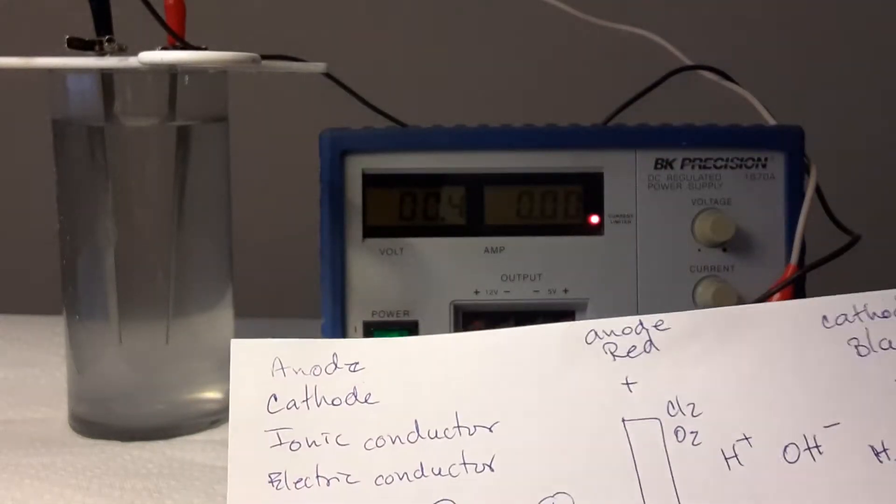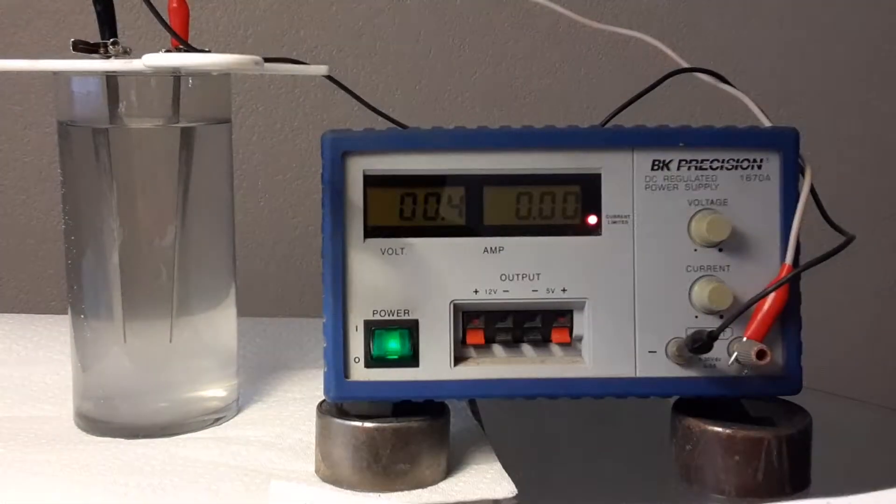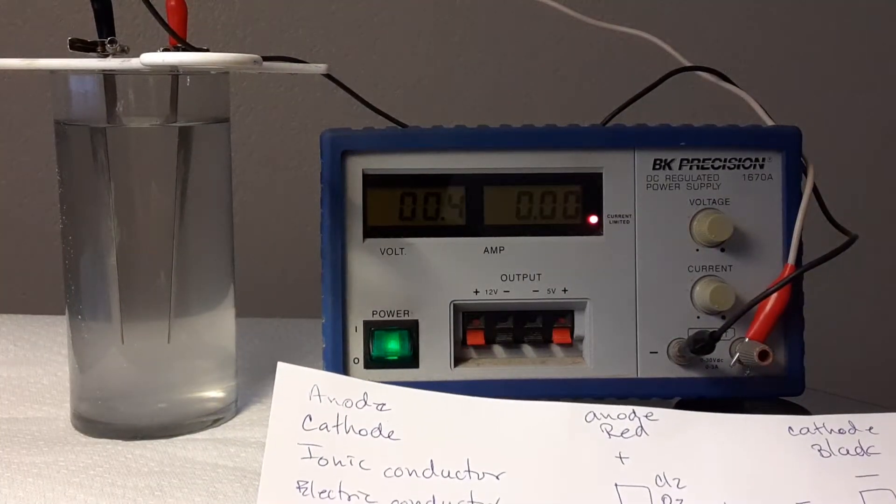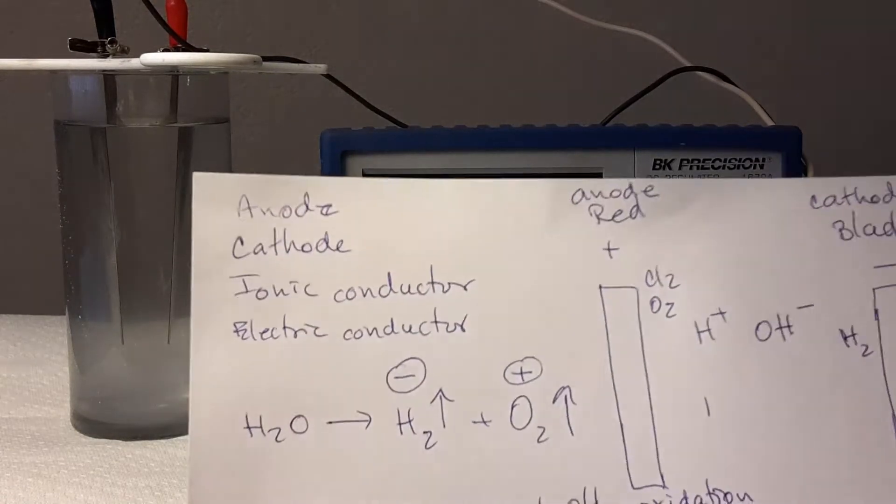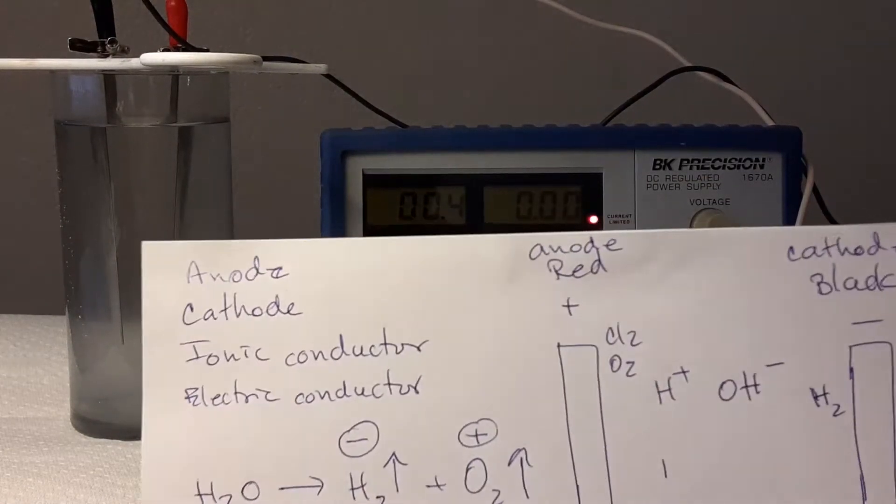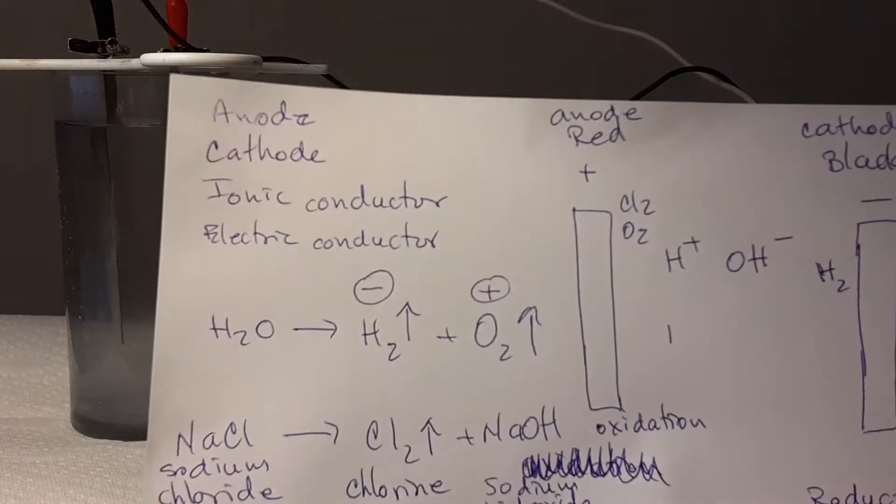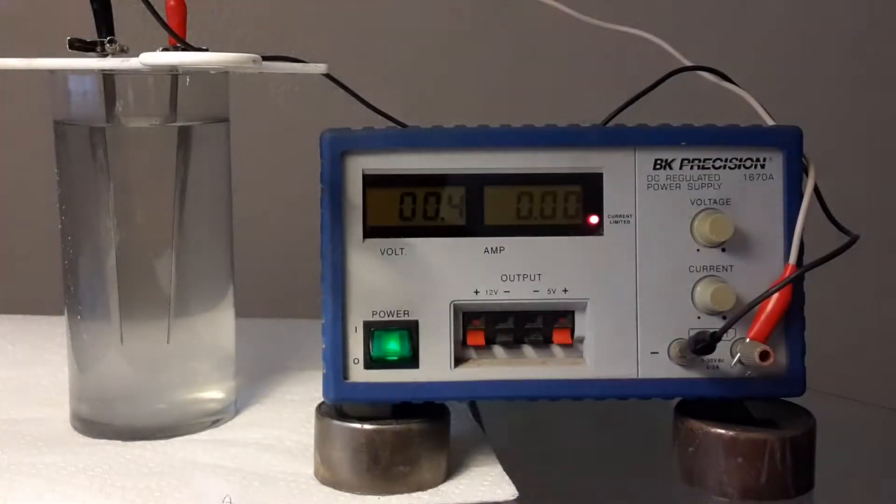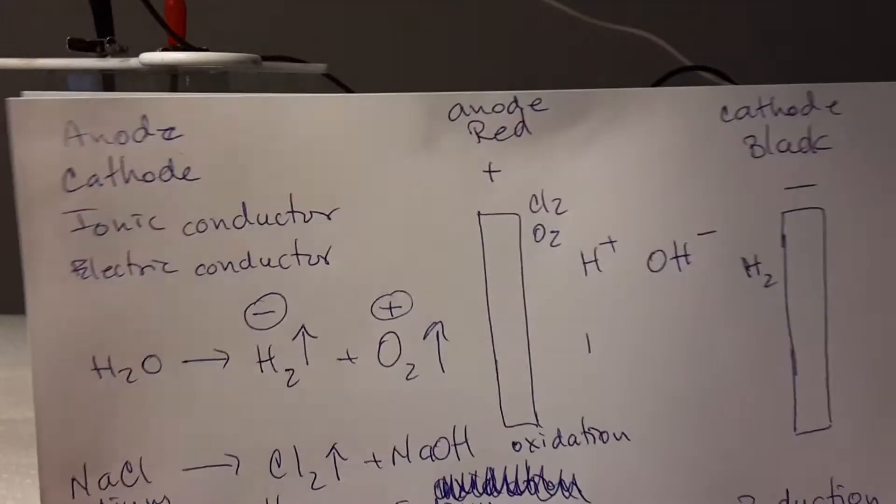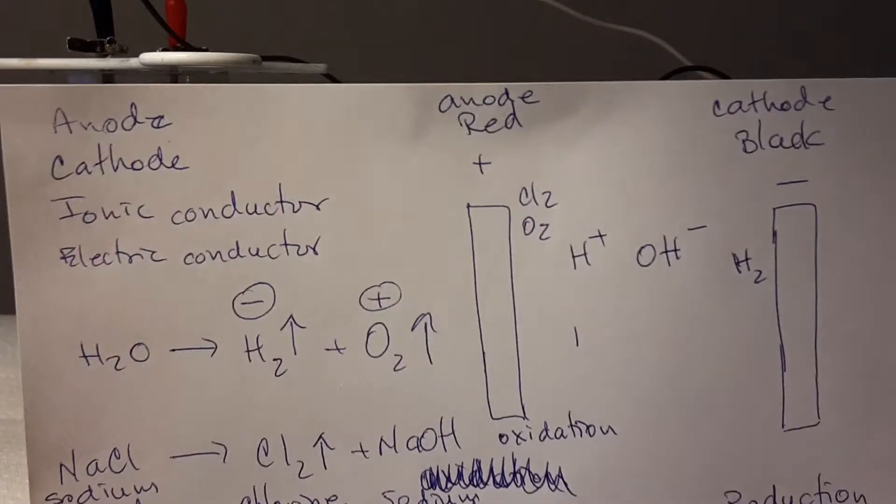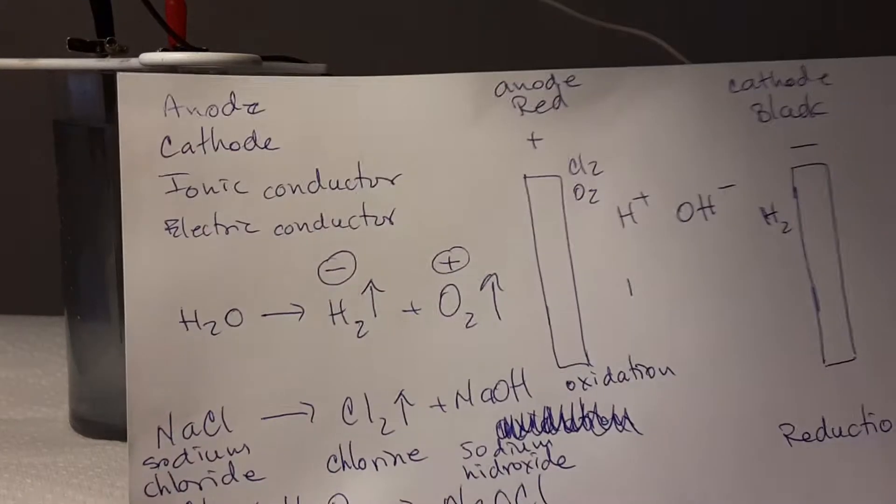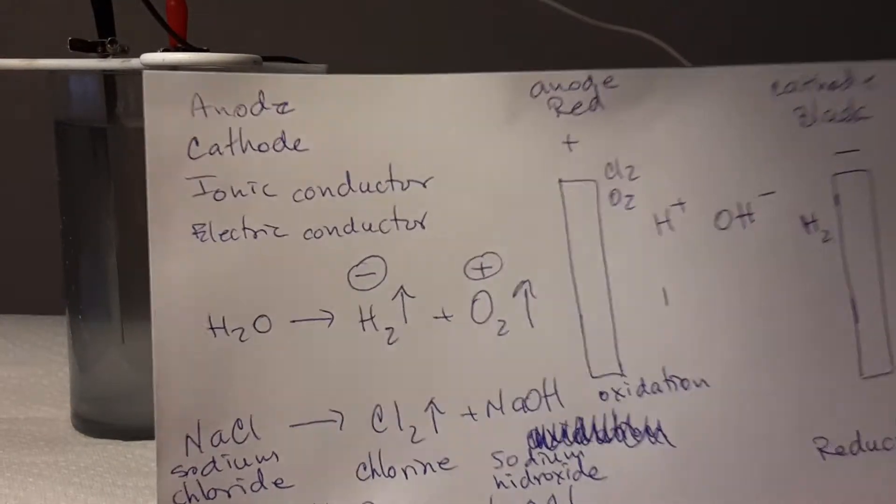The red one is the anode, the place where we have the oxidation reactions. The black one is the cathode, the negative pole, and we will have the reduction reactions there.